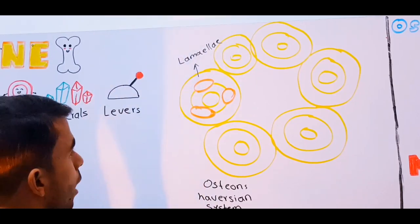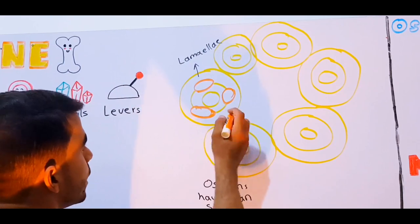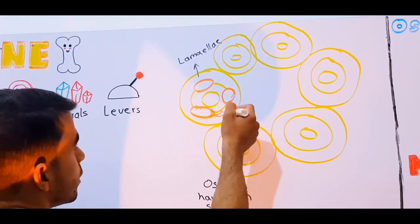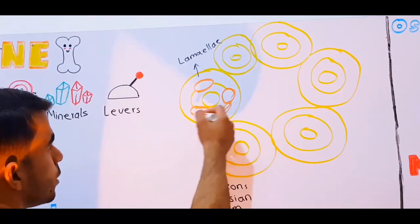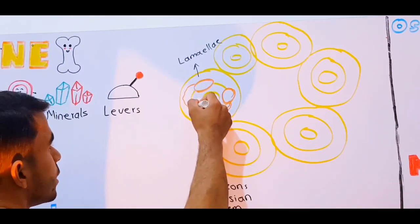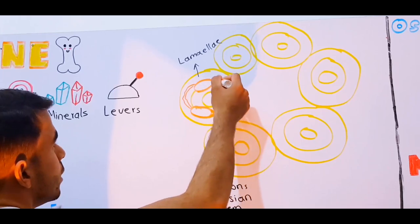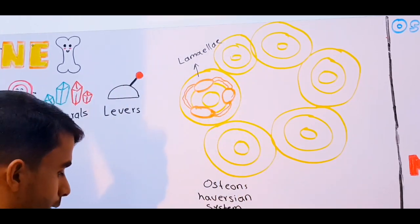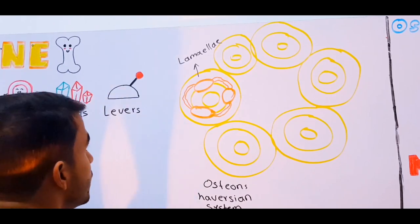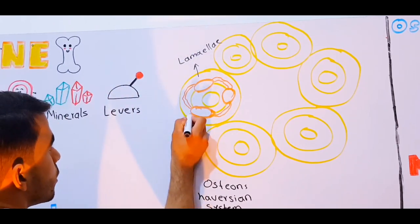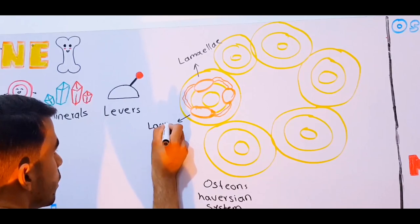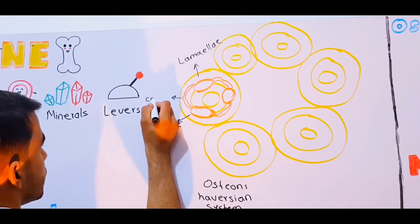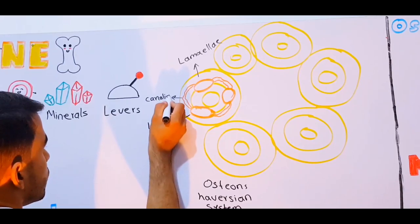Each of these osteons are connected via canals. Each of the lacunae are connected via canals called canaliculi.